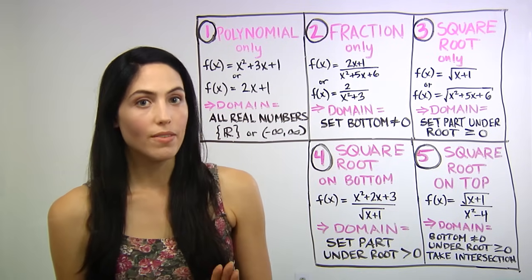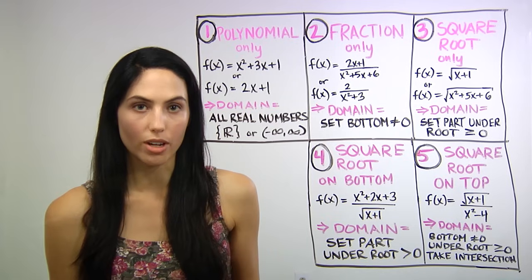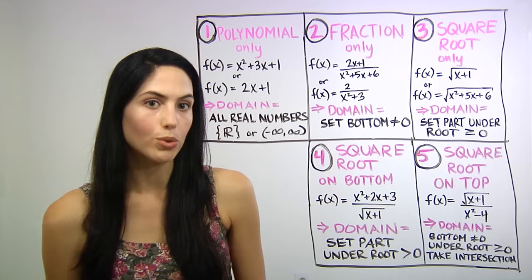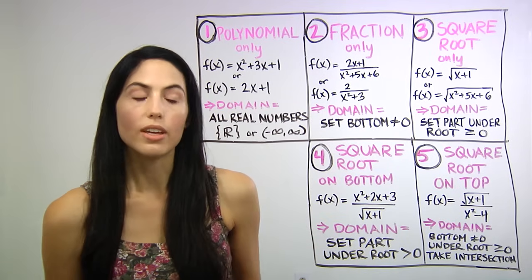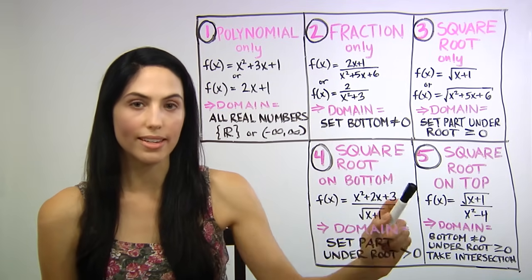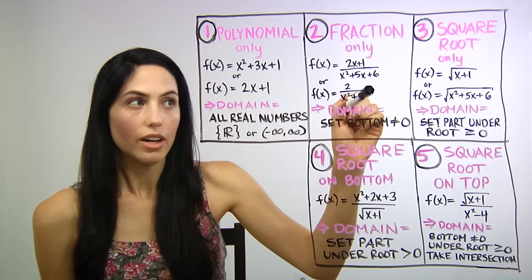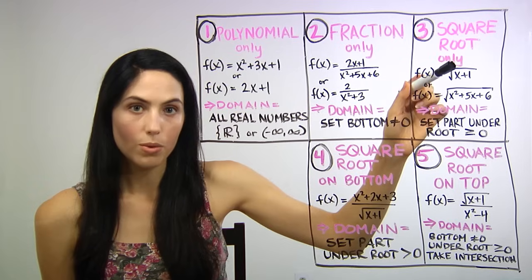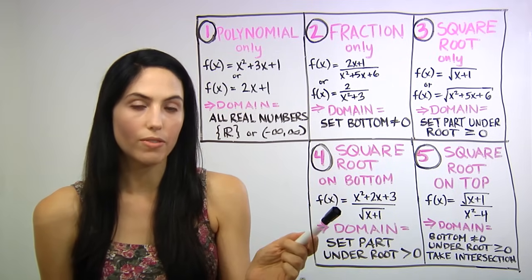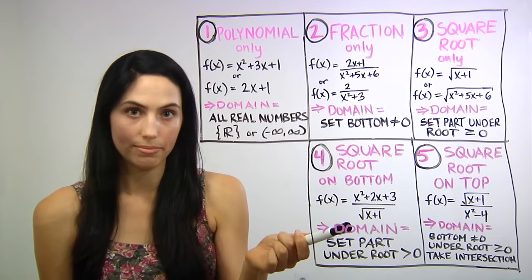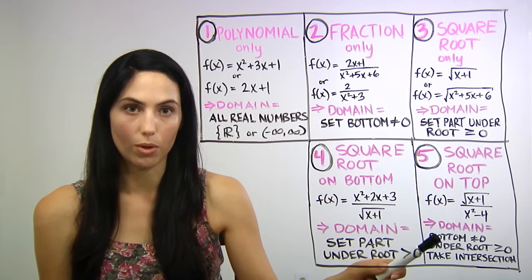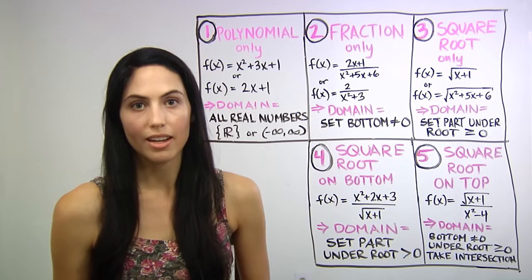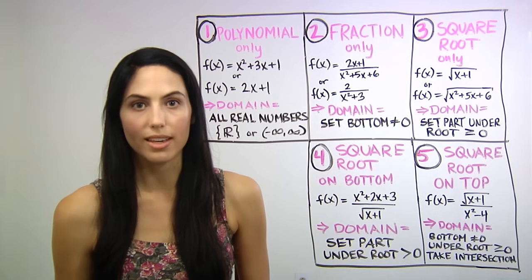If you don't have just a polynomial and you have something more complicated, like a fraction or a square root, or possibly both, it's going to be one of these four cases: just a fraction, a square root on its own, a fraction with a square root in the bottom, or a fraction with a square root in the top — the numerator. I'm going to explain how to find the domain for all of those cases.